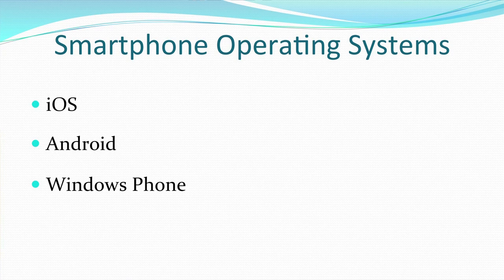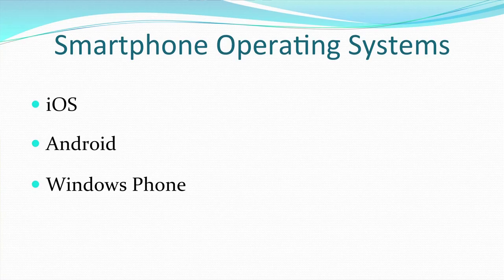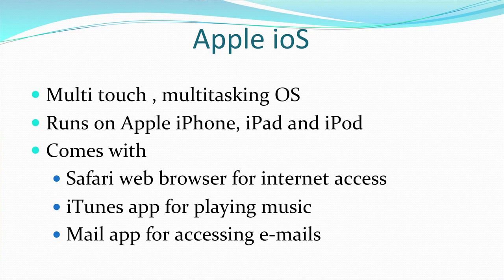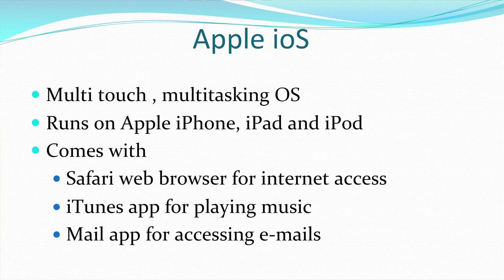Next are smartphone operating systems. Three types are discussed: iOS, Android, and Windows Phone. The iOS operating system is by Apple Inc. and is a multi-touch, multitasking operating system. It runs on all Apple devices — iPhone, iPad, and iPod. It comes with the Safari web browser for internet access, the iTunes app for music, and a Mail app for accessing emails. As new versions are released, features keep increasing.